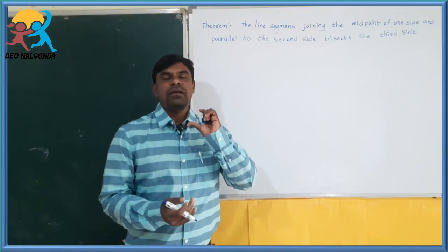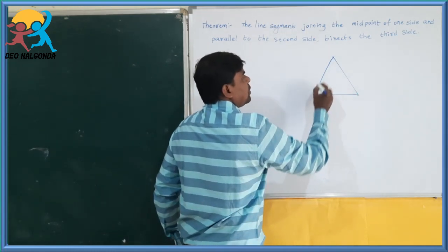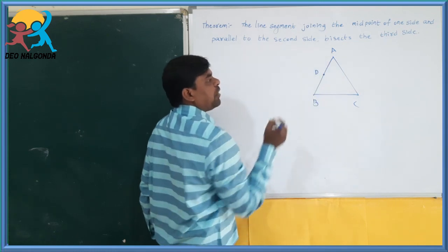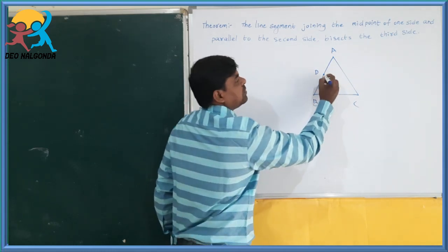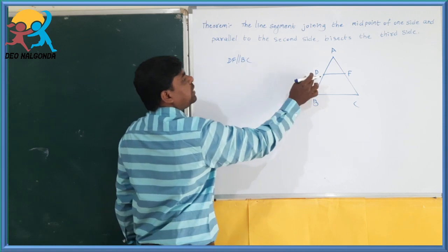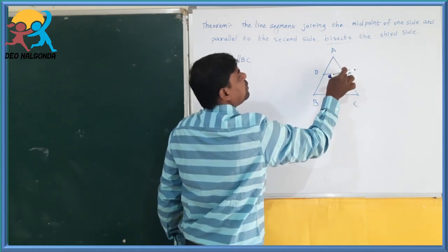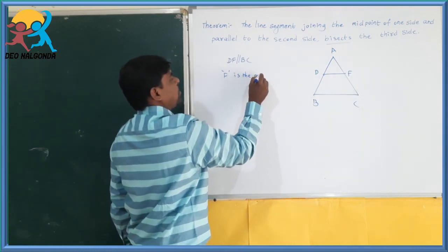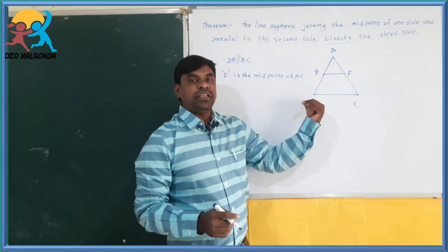Let us go through the converse of the previous theorem. In a triangle ABC, D is the midpoint of AB. We draw a line through D parallel to the second side BC — that is DF parallel to BC. This line bisects the third side, meaning F is the midpoint of AC. This is the converse of the midpoint theorem — that is your work to prove.